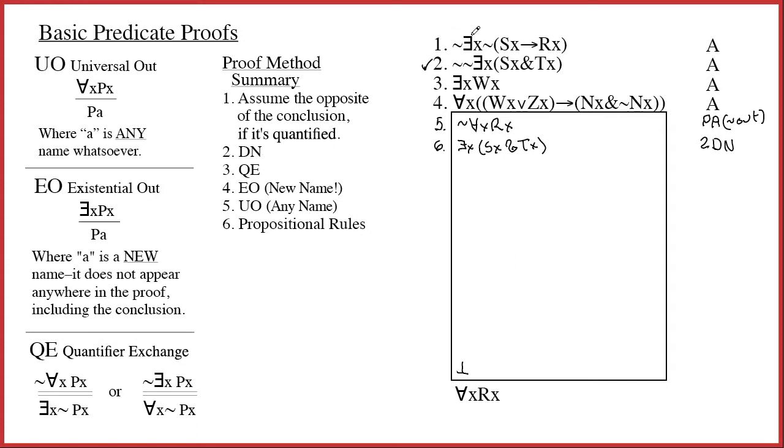Now quantifier exchange. Any case, like line number 1 and line number 5, where you have a tilde in front of the quantifier, you need to do quantifier exchange to get the tilde out of the way. When we work on it, all that's going to change is the tilde and the quantifier. We switch to the opposite quantifier, and then we move the tilde to the other side. So this tilde right here is part of the Px part, and that's why I'm going to end up with two tildes right here. Sx arrow Rx. And that will be 1 quantifier exchange.